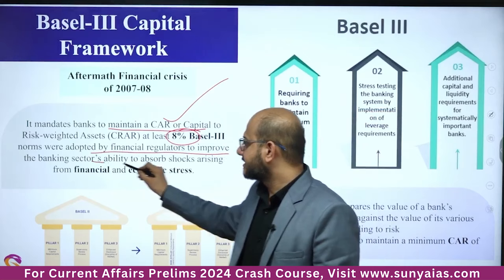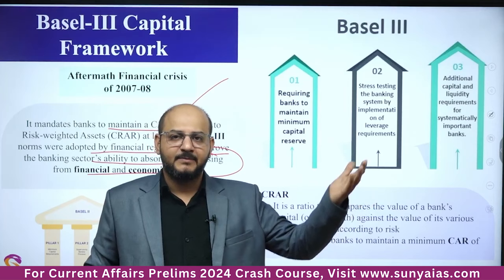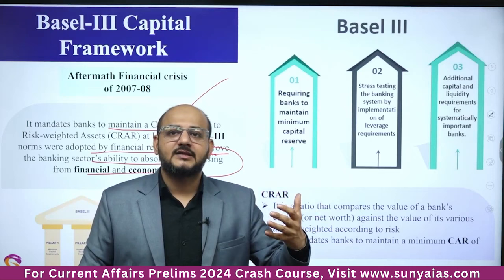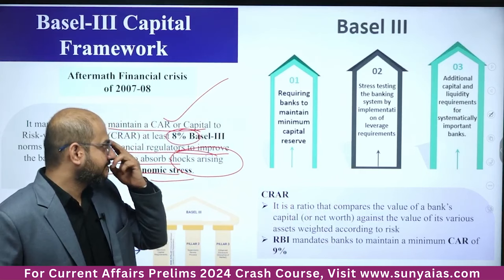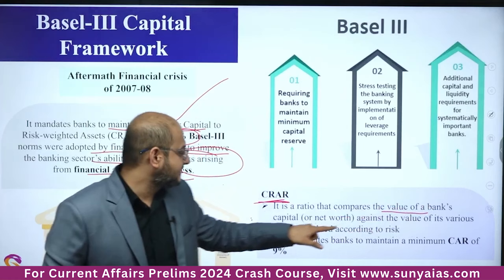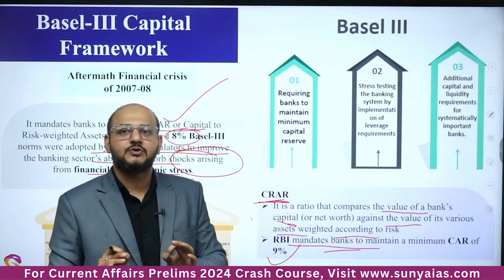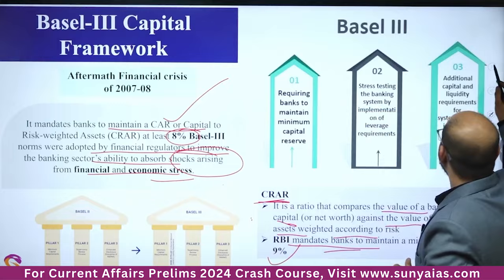These norms were adopted by financial regulators to improve the banking sector's ability to absorb shocks arising from financial and economic sectors — events like the IL&FS crisis, Punjab National Bank crisis, or scams overlooked by credit rating agencies. In India, RBI mandates banks to maintain a minimum capital adequacy ratio of 9% for all financial institutions, which is higher than the Basel III minimum of 8%.